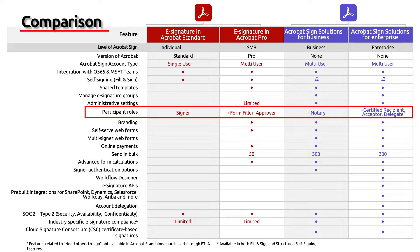Adobe Sign supports form filler, signer, and approver. In the business version you also have a notary, and in the enterprise version you have three more roles: a certified recipient, an acceptor, or a delegator.